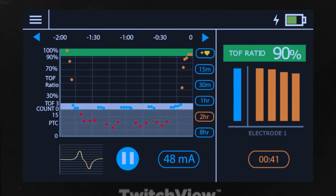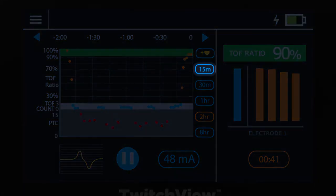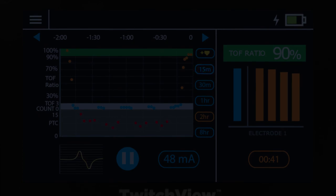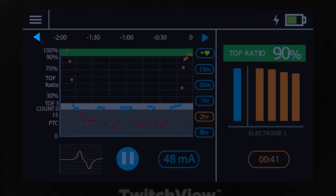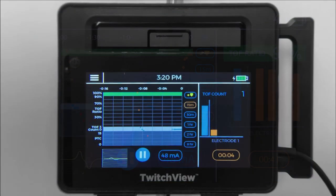The trend plot can be scaled to display short windows of time down to 15 minutes and longer windows of time up to 8 hours. During longer cases, you can scroll back to view earlier periods of time.